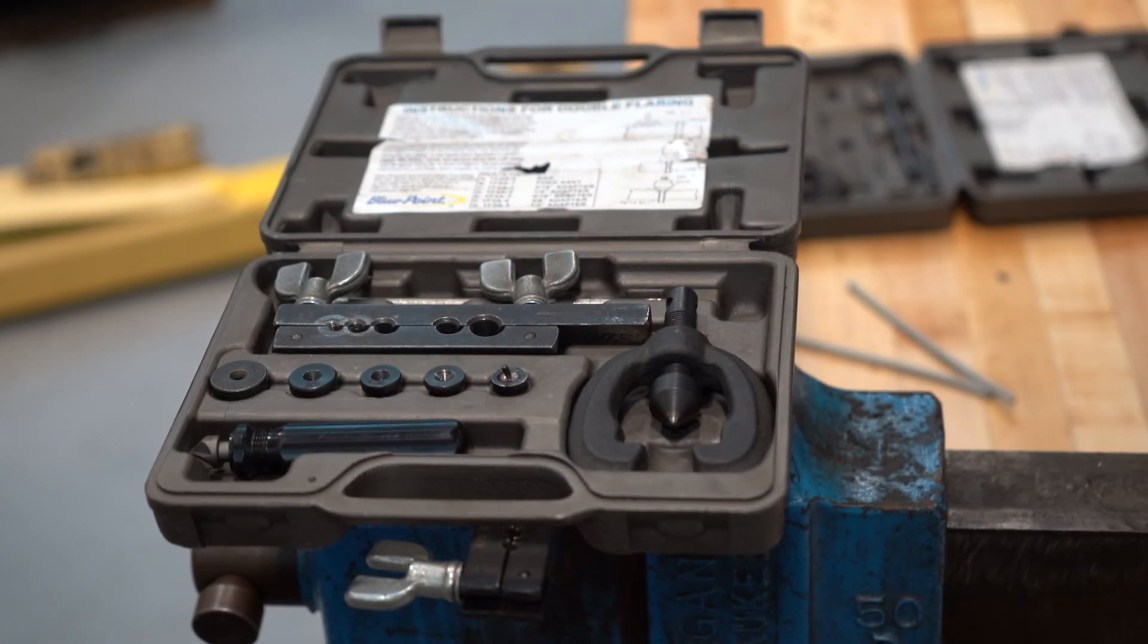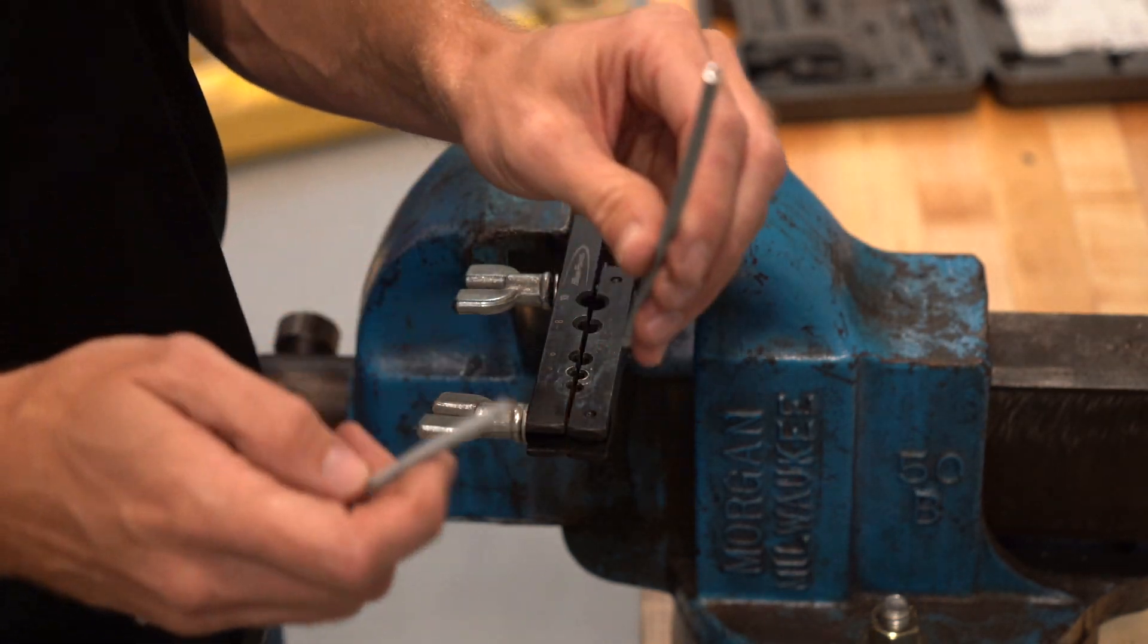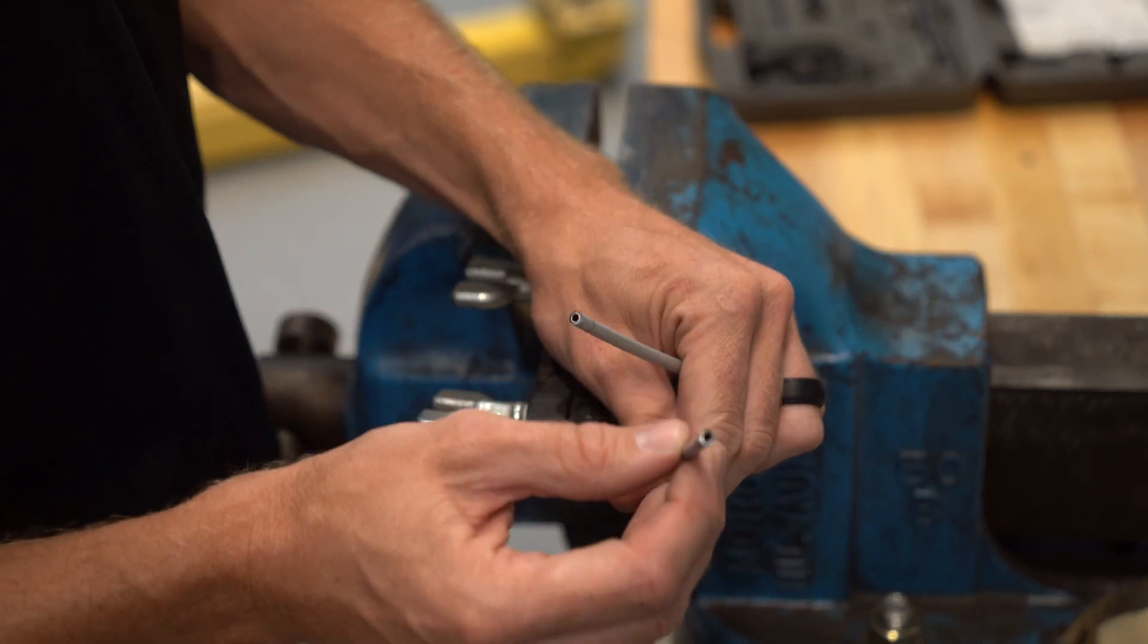As you can see, we're using a standard double flaring kit, one that's pretty common that you can purchase at one of the local parts stores or even rent. We're going to flare the end of this brake line.